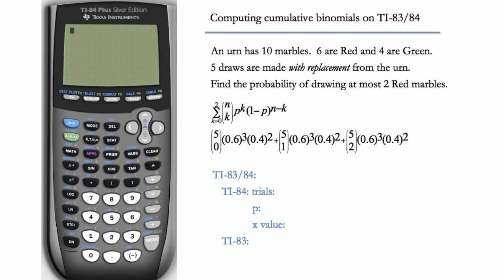This has a higher probability, because how can we get at most two red marbles? We could get zero red marbles, we could get one red marble, or we could get two red marbles. So really what we have is three distinct ways of getting at most two red marbles.